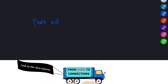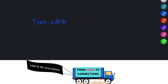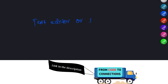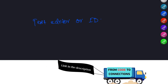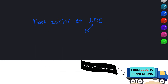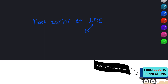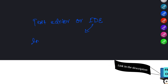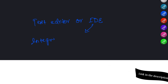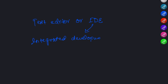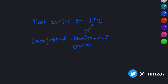The first step in setting up a development environment is choosing a text editor or integrated development environment. A text editor is a lightweight tool that lets you write and edit text files, while an IDE is a more powerful tool that offers features such as code highlighting, auto-completion, and debugging.